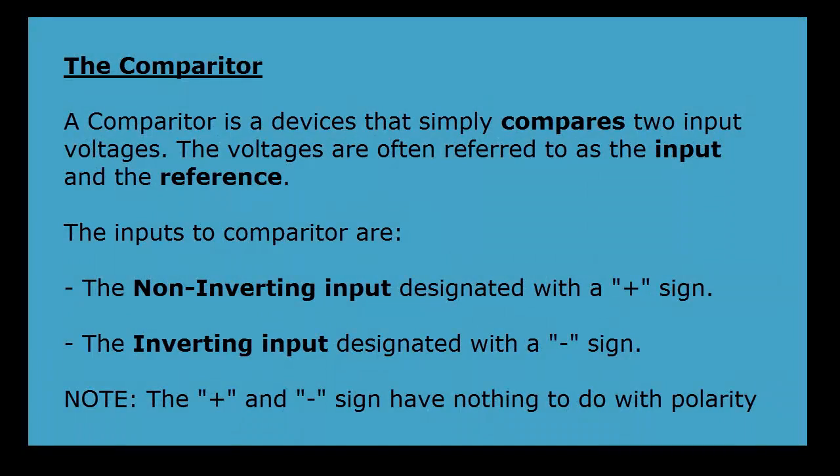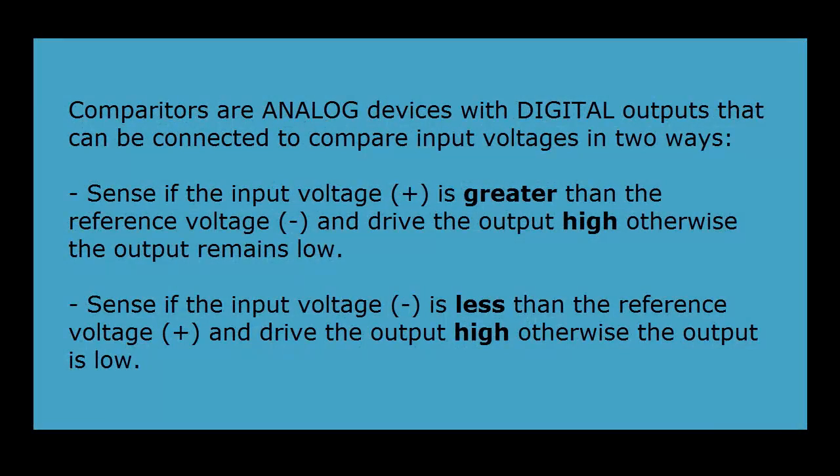So a comparator is really a device that just compares two input voltages and provides a high or low output depending on the results of that comparison. Comparators are analog devices with digital outputs. And so you can sense whether one input is greater than another or sense if one input is less than another using a comparator.